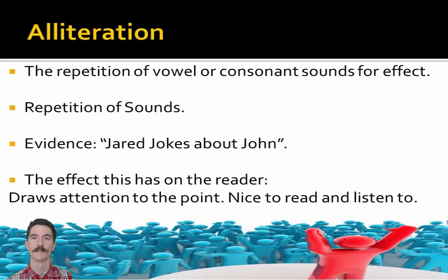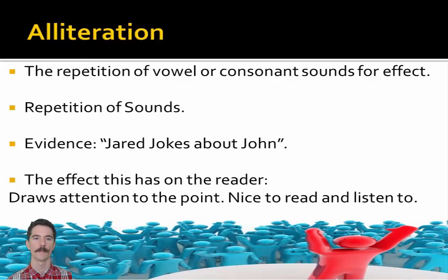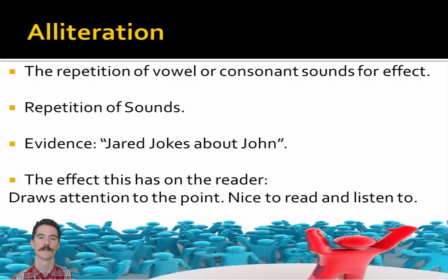Firstly, and probably the easiest, is alliteration, which is the repetition of vowel or consonant sounds for effect. Three words: repetition of sounds. Our example is 'Jared jokes about John' — the J sound is repeated and is quite obvious to pick out when reading through an article. The effect is it draws attention to the point and is nice to read and listen to; it's not persuasive in itself, but it draws attention.